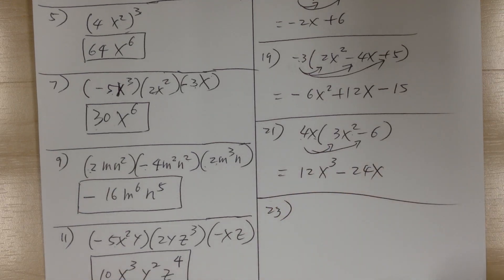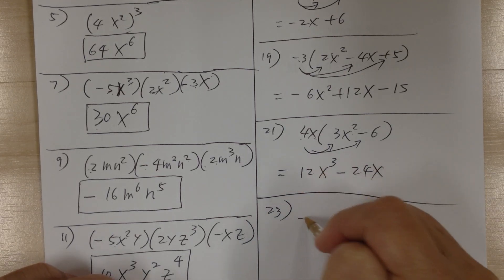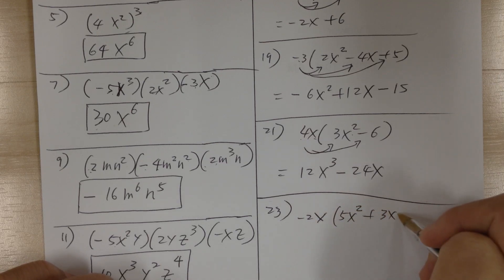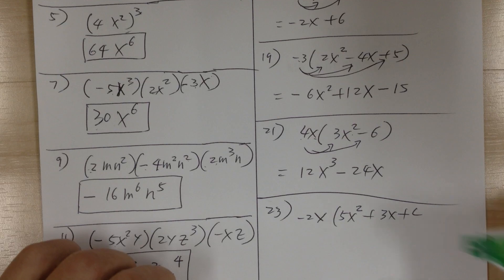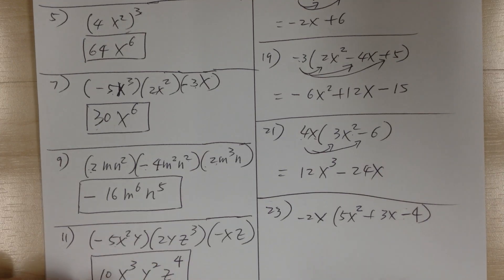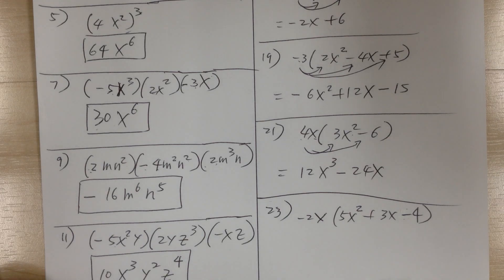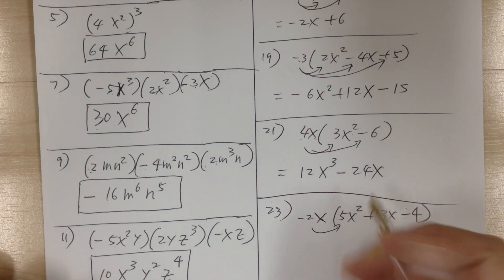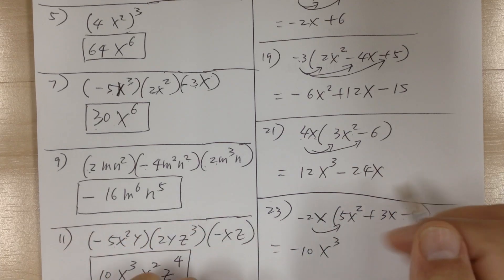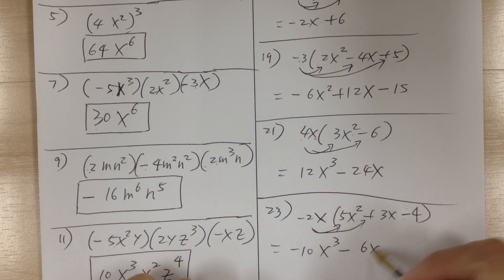Number 23. You have negative 2x times (5x squared plus 3x minus 4). Distribute: this gives negative 10x to the 3. Sign, number, alphabet: next term gives minus 6x squared, and then multiplying gives plus 8x.